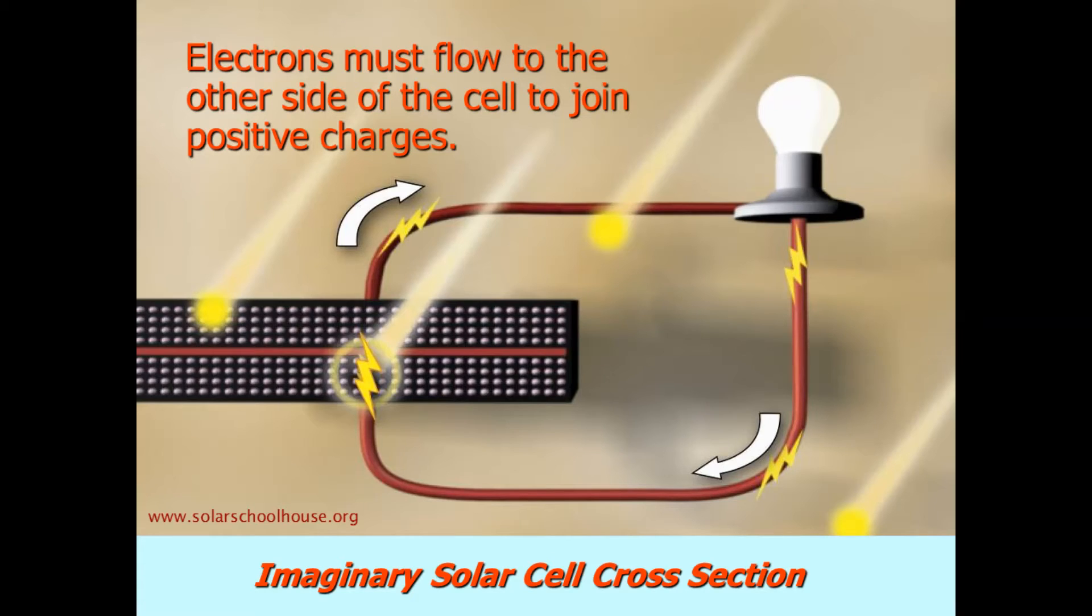Imagine that this is the cross-section of a silicon solar cell. The circles represent atoms. When electrons in solar cells are knocked free by photons, the design of the cell forces the electrons to flow through wires connecting the front and back of the cell. This flow of electrons is what we call electricity.